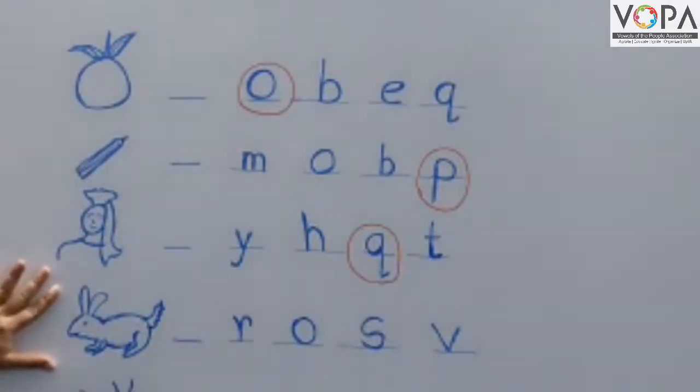The next picture is. What is this? This is a rabbit. R for rabbit. R-A-B-B-I-T, rabbit. The first letter of rabbit is R. So circle round the letter R.